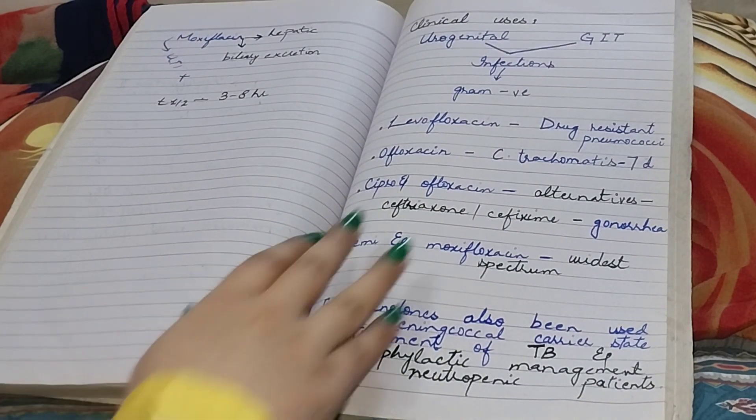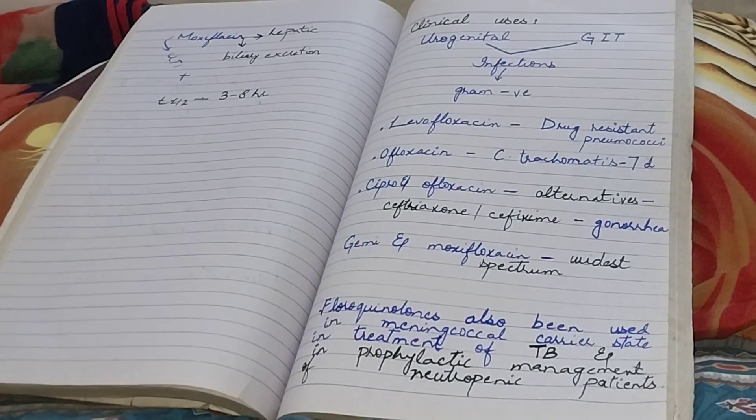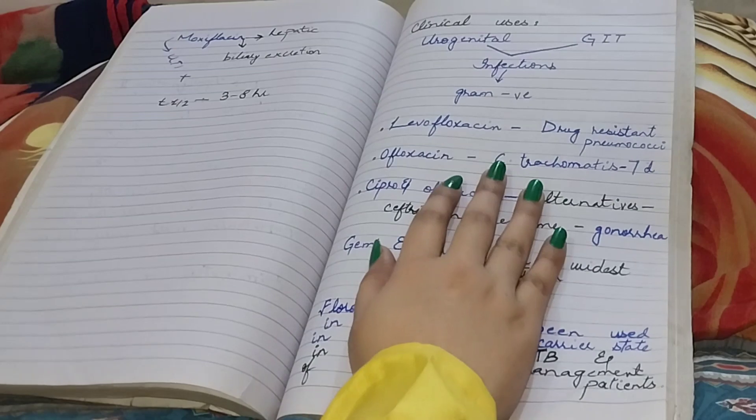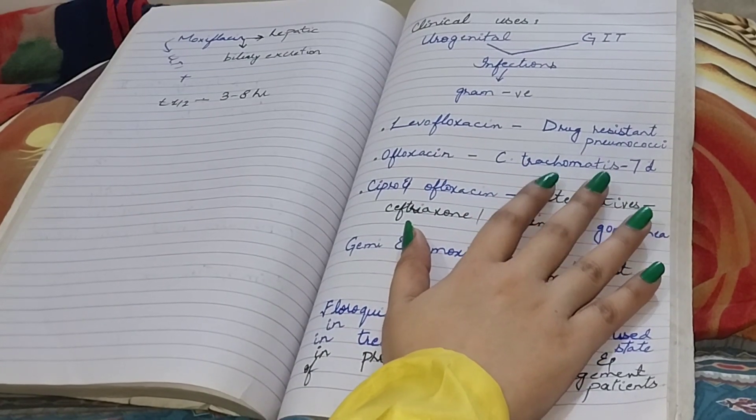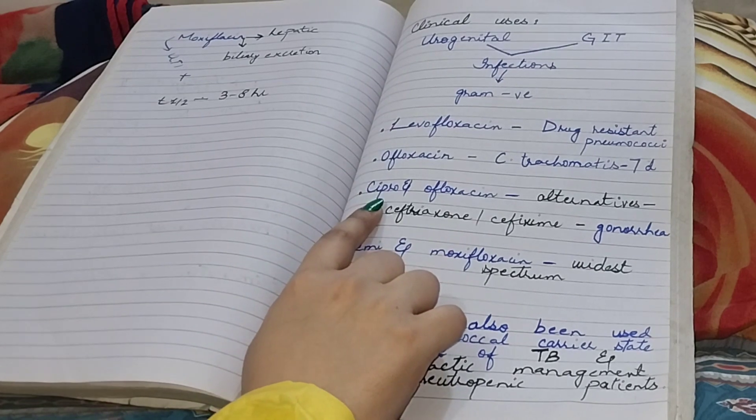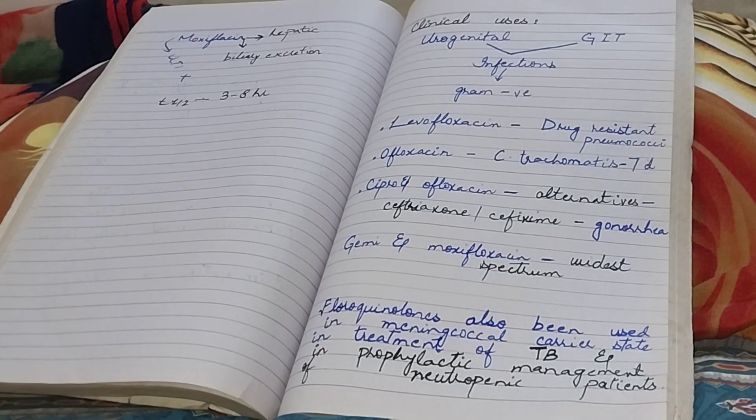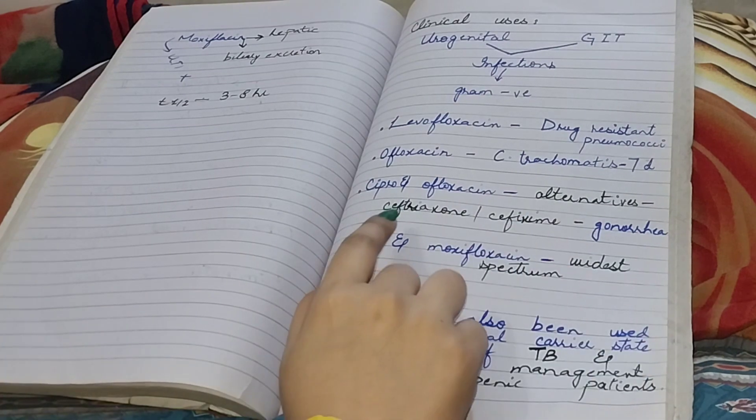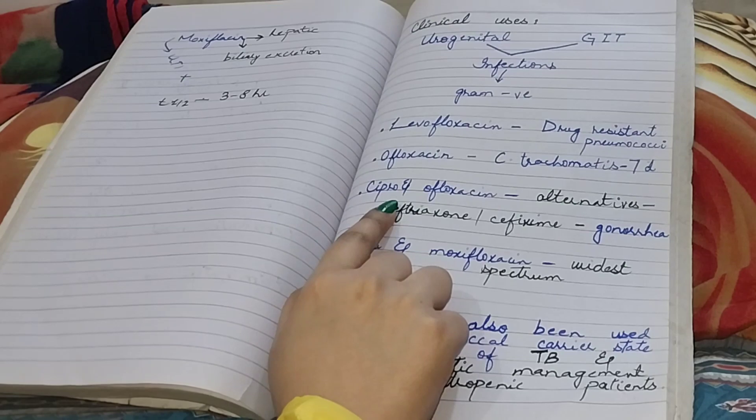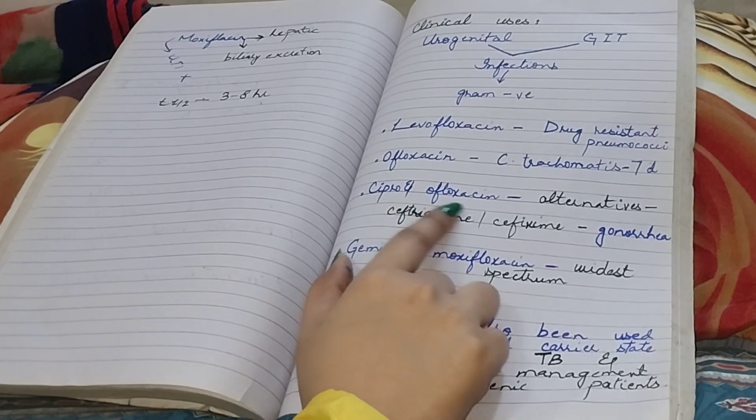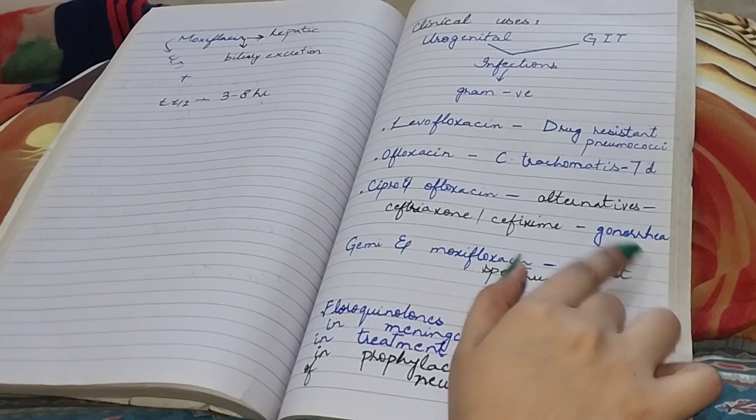Levofloxacin is used to treat drug-resistant pneumonia. Ofloxacin is active against C. trachomatis, a seven-day course of treatment is required. Ciprofloxacin and ofloxacin, they both are used as an alternative to ceftriaxone and cefixime. A single dose of cipro and ofloxacin is used as an alternative to treat gonorrhea.